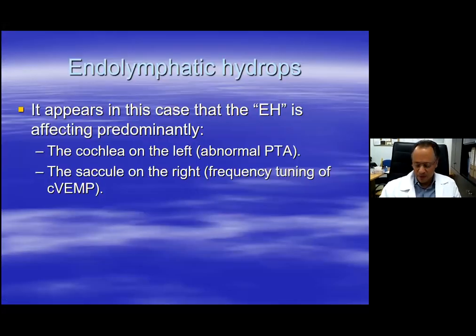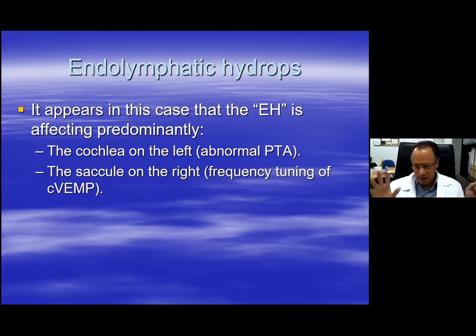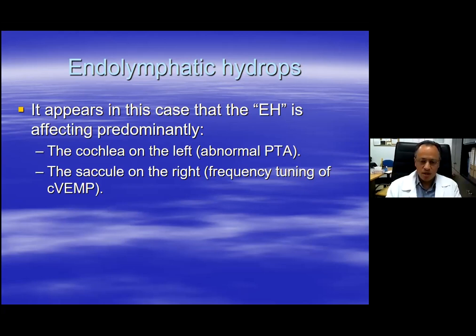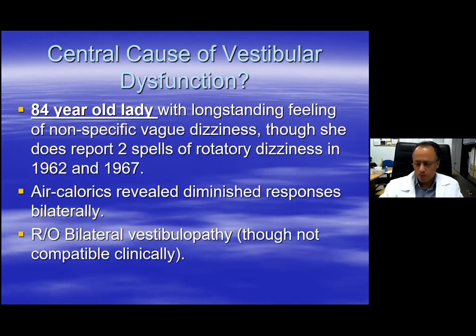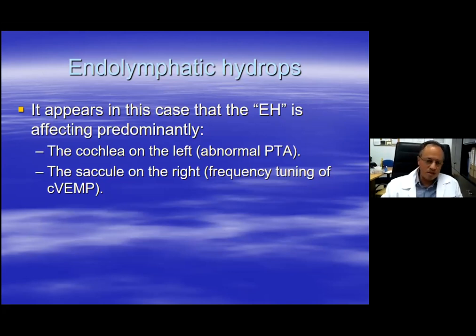I haven't seen anything published similar to this, and I hope to publish this case soon. It appears that we have a Meniere's or Meniere's-like condition in this case, but the hydrops — if we believe that this is the cause of these conditions — is affecting the cochlea on the left but the saccule or the vestibular labyrinth on the right. So we have differential involvement of the two labyrinths apparently in this patient. But why would this be important since we know that the patient has Meniere's disease?